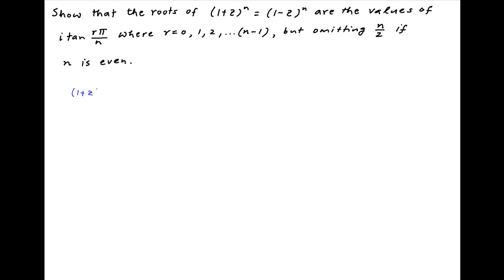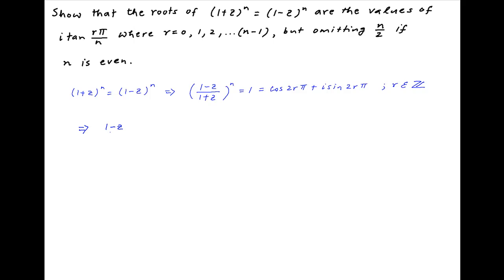The given equation is (1+c)^n = (1-c)^n, which can be written as ((1-c)/(1+c))^n = 1. The right hand side can be written as cos(2rπ) + i·sin(2rπ), where r is an integer. It follows that (1-c)/(1+c) = (cos(2rπ) + i·sin(2rπ))^(1/n), which using De Moivre's theorem is equal to cos(2rπ/n) + i·sin(2rπ/n).